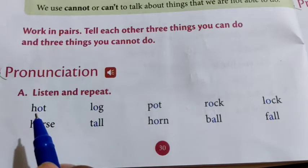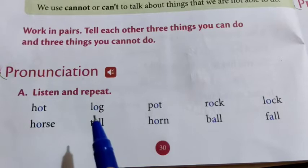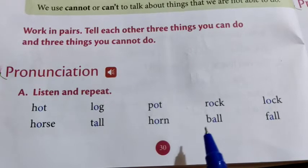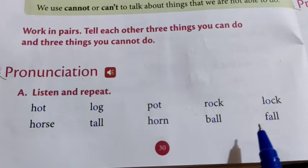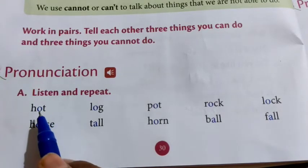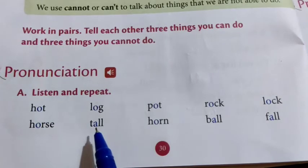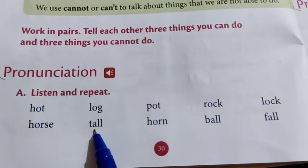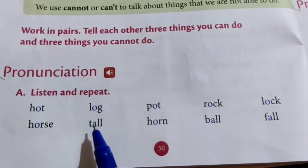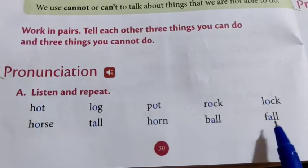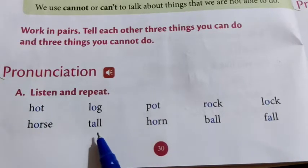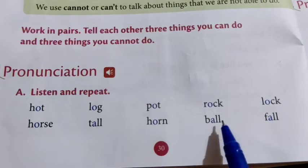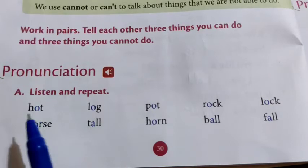Read it loudly children: hot, horse, log, tall, pot, horn, rock, ball, lock, fall. The pronunciation is the same — the 'oh' sound is coming: tall, ball, fall. Don't read it as 'tal', 'bal', 'fal' — that's wrong. Tall, ball, fall. Understood? Once again: hot, lock, pot, rock, lock, horse, tall, horn, ball, fall.